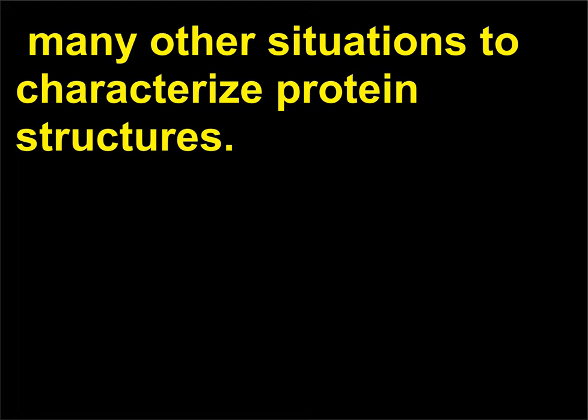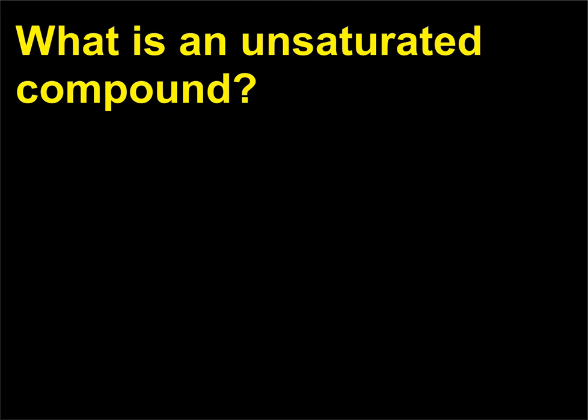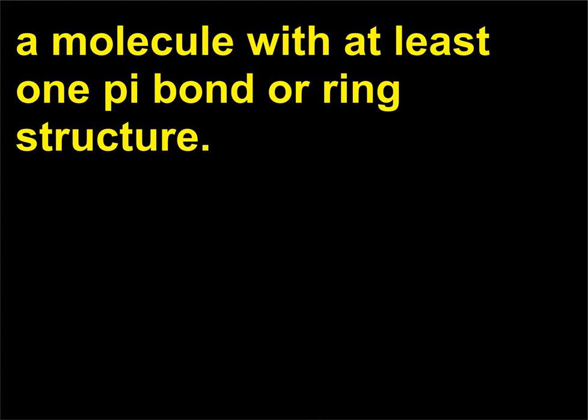What is an unsaturated compound? A molecule with at least one pi bond or ring structure.